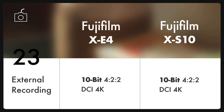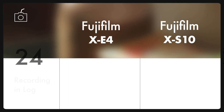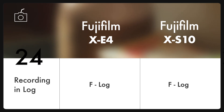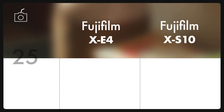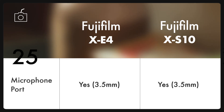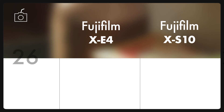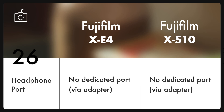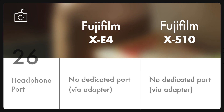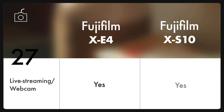While the cameras record 8-bit internally, they can record 10-bit on an external recorder. Both can record in F-Log, 8-bit internally and 10-bit externally. They have a 3.5mm stereo mini connector for microphone, but no dedicated headphone port. A headphone adapter is included which connects to the camera's USB-C port and lets you monitor recording or listen to footage during playback. Both cameras also have the capability to live stream.